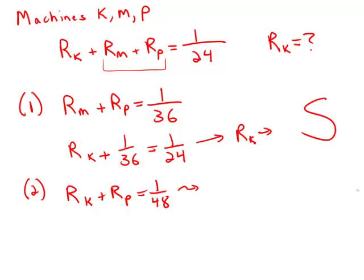Through a similar analysis, we could solve for the rate of M, but we have no way to distinguish the rate of K from the rate of P. We know their sum but not their individual contributions. This statement by itself is insufficient.